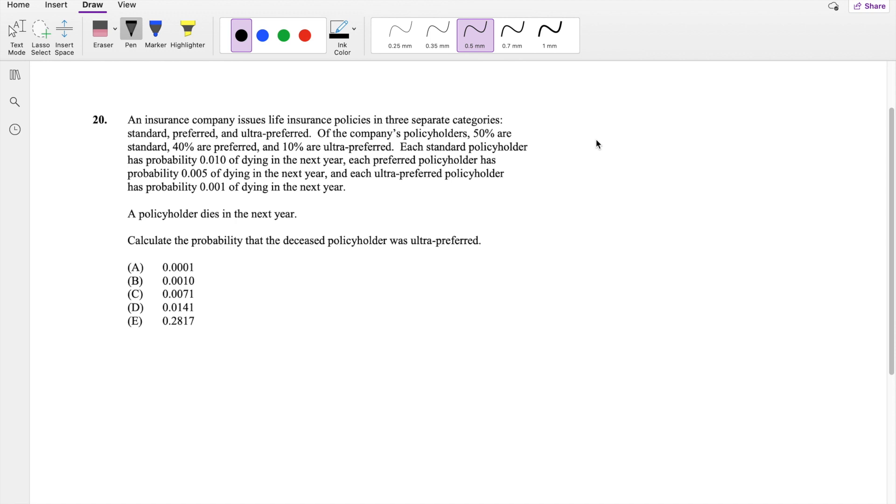Okay, as you already did, let's just dive right in. So basically, they can separate these life insurance policyholders into three categories: Standard, preferred, and ultra-preferred.